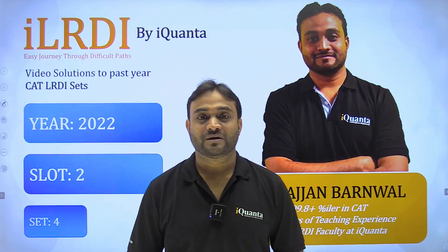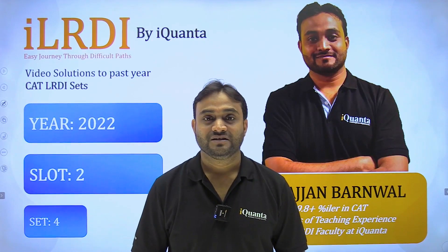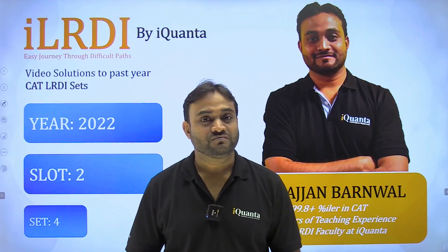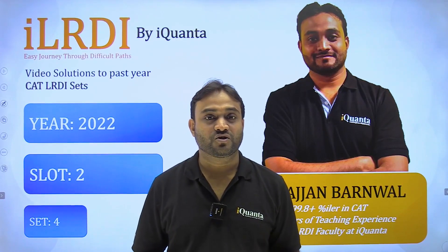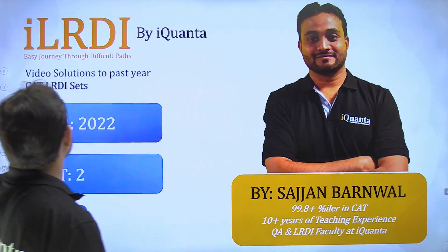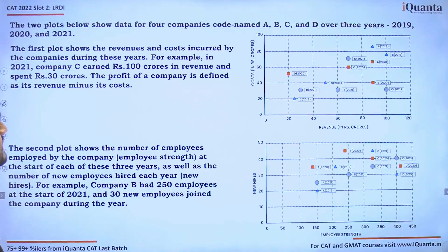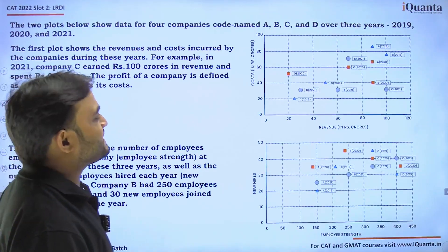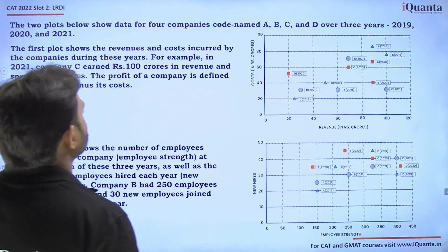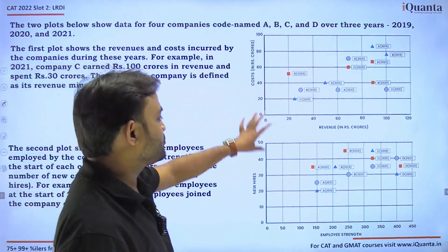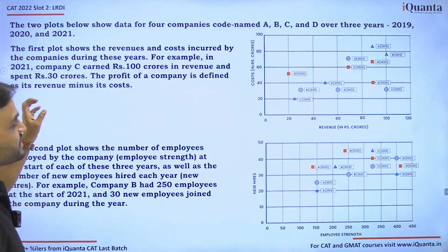Hello everyone, welcome to iQuanta. Today we are going to discuss CAT 2022 Slot 2, fourth set in the DILRDI series. This set is regarding two plots showing data for four companies codenamed A, B, C, and D over three years: 2019, 2020, and 2021.